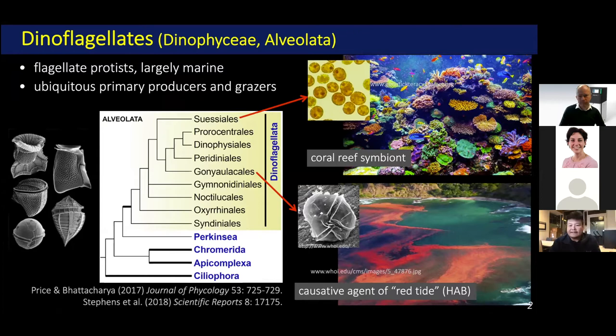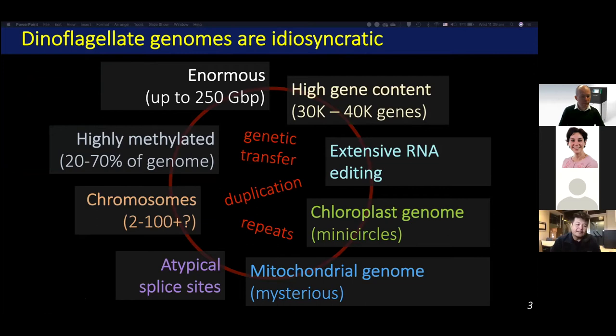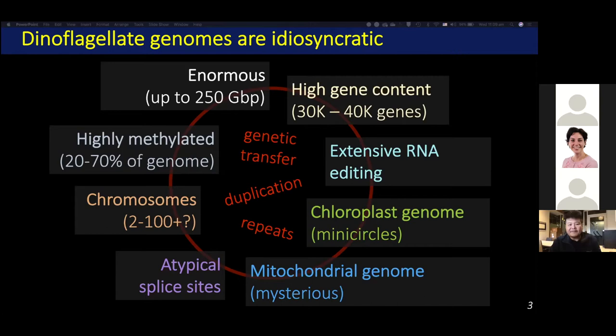Dinoflagellates are a vastly diverse group of algae or phytoplankton. They range from critical symbionts in corals and other coral reef animals to bloom-forming, toxin-producing species that cause red tide. Although dinoflagellates are ecologically important, little genome data are available for these algae. The dinoflagellate genomes are highly idiosyncratic. They have enormous genome sizes ranging between 1 to 250 gigabases — that's more than 70 times larger than the human genome alone. The chromosomes are permanently condensed in a liquid crystalline structure. The genomes are highly methylated, and the number of chromosomes remains unclear. However, two very recent studies published as bioarchive preprints in early July show that some species likely have 91 to 94 chromosomes.